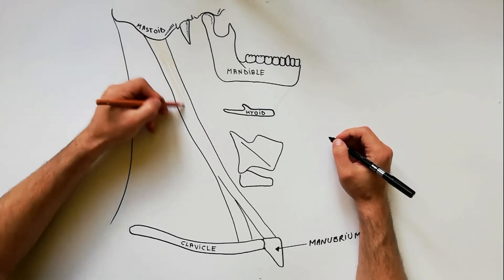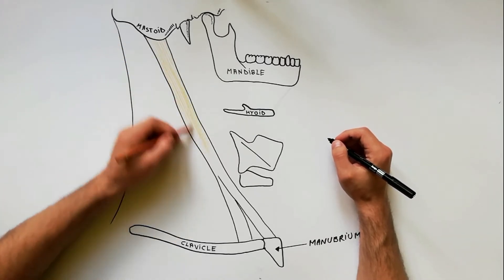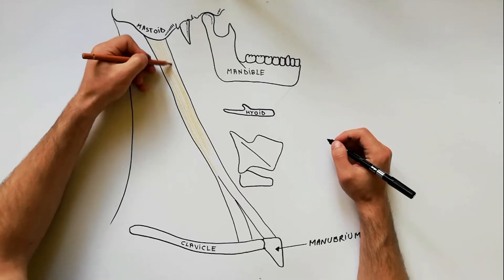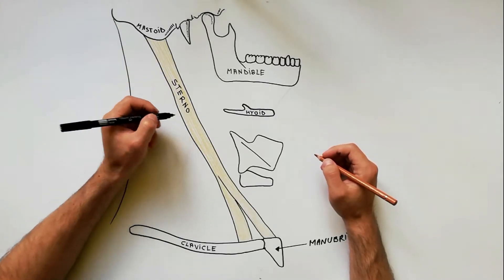The anterior triangle of the neck is a large triangular space on each side of the neck in front of the sternocleidomastoid muscle.